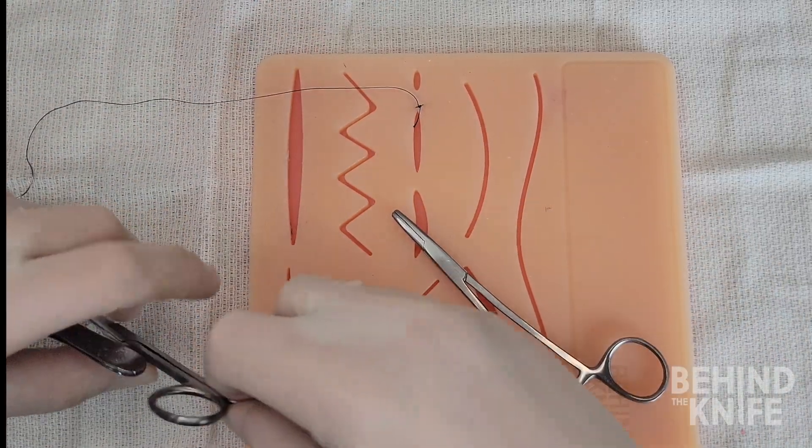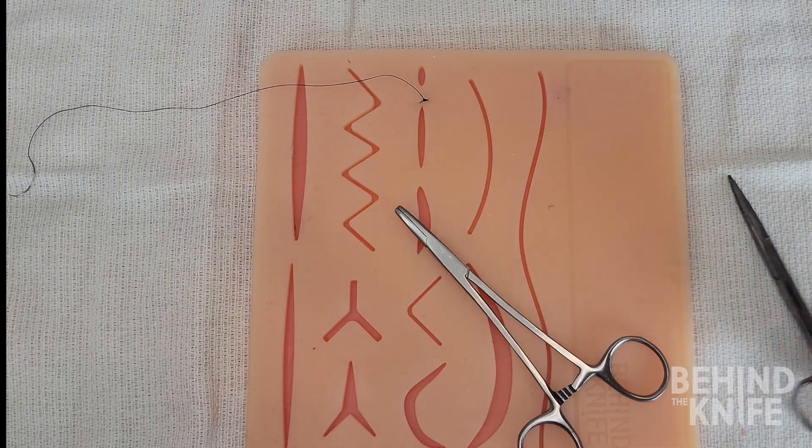After we tie down this anchoring stitch we can trim the short tail but we'll reload the needle without cutting the long tail.